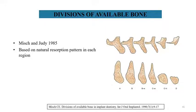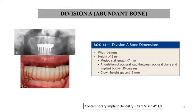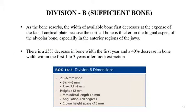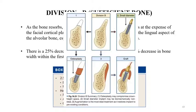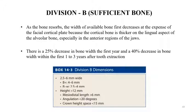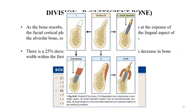Coming to the division of available bone according to Misch and Judy (1985), based on natural resorption patterns: Division A is abundant bone with width more than 6 mm, height more than 12 mm, and mesiodistal length more than 7 mm — it is the ideal division for implant placement. Division B is sufficient bone; as the bone resorbs, the width of available bone first decreases at the expense of the facial cortical plate, as the cortical bone is thicker on the lingual aspect, especially in the anterior jaw. Division B bone can be converted to Division A using a smaller diameter implant, osteoplasty, or grafting.